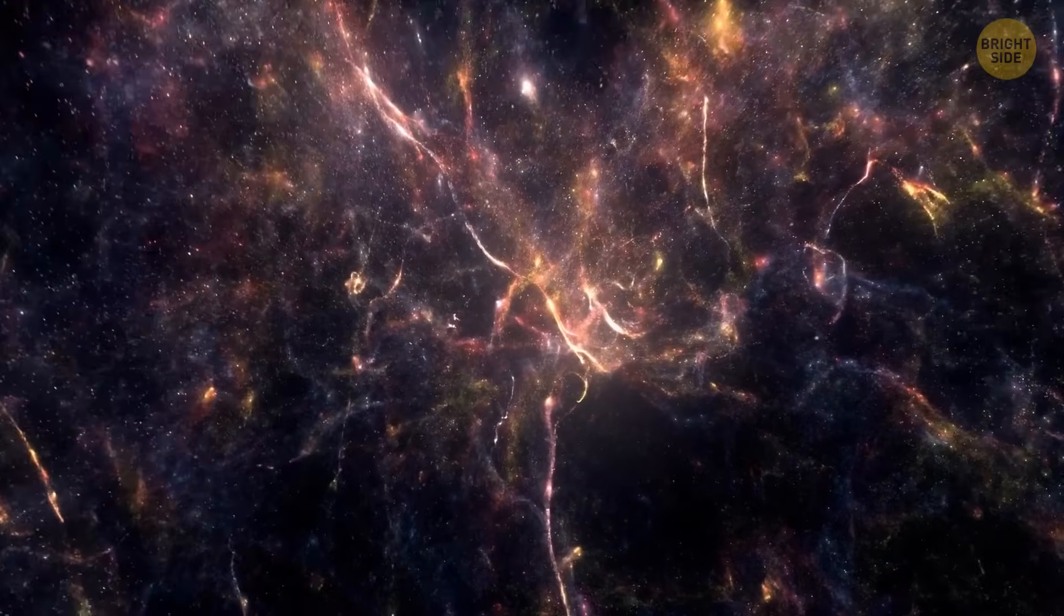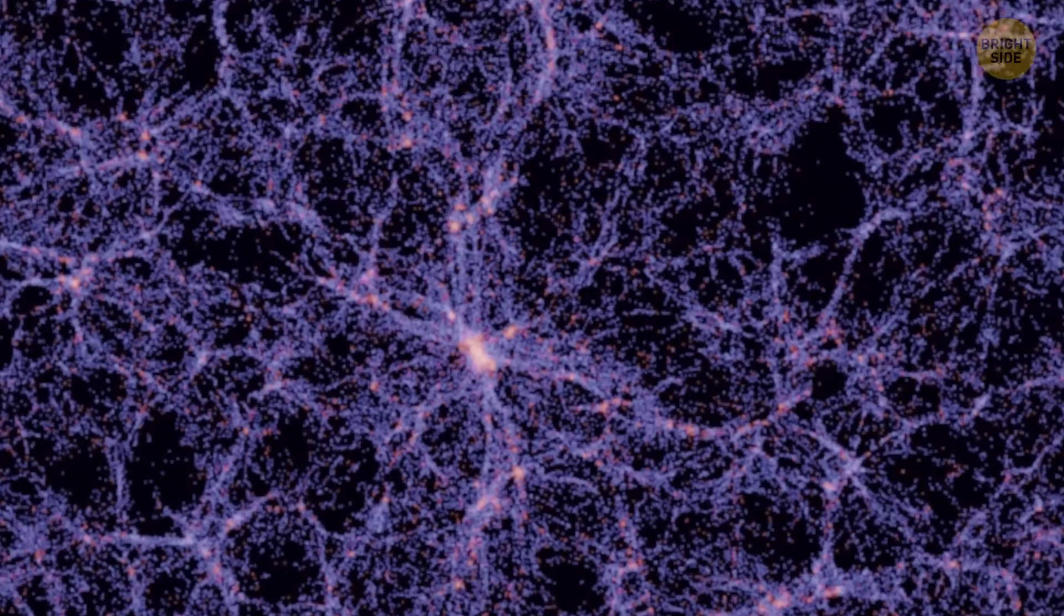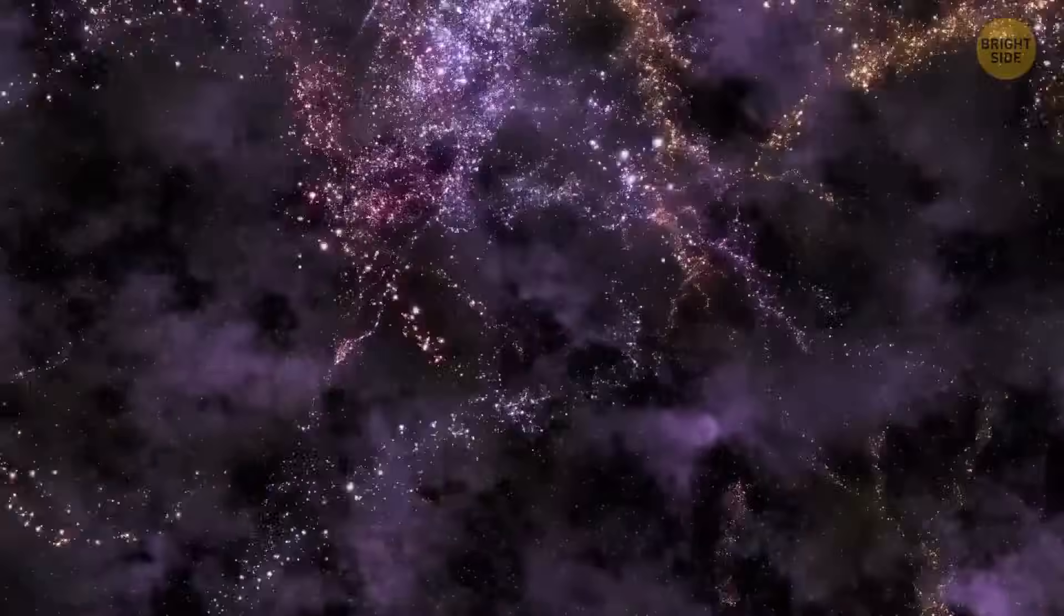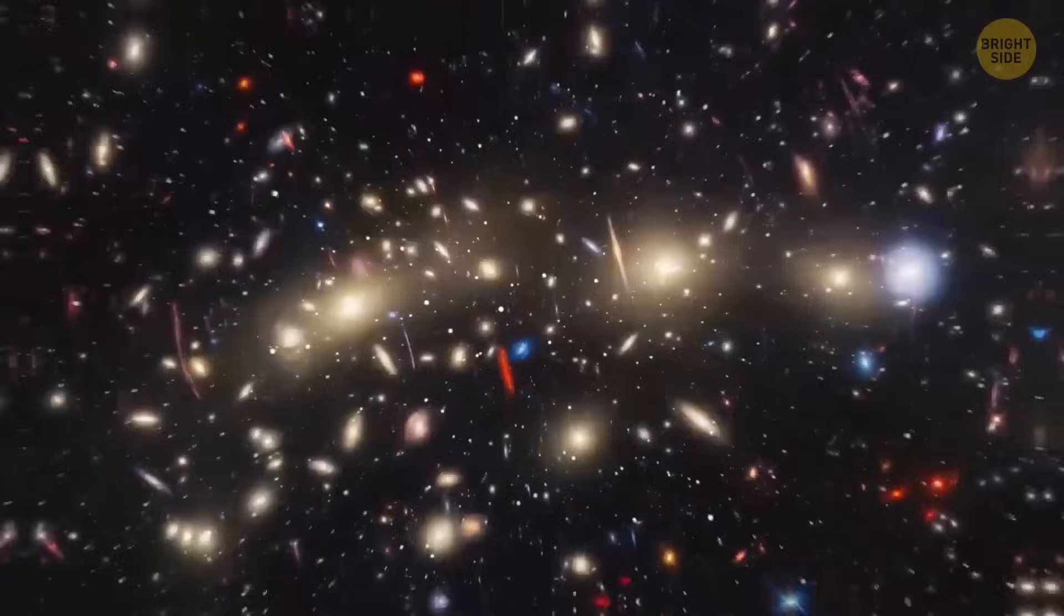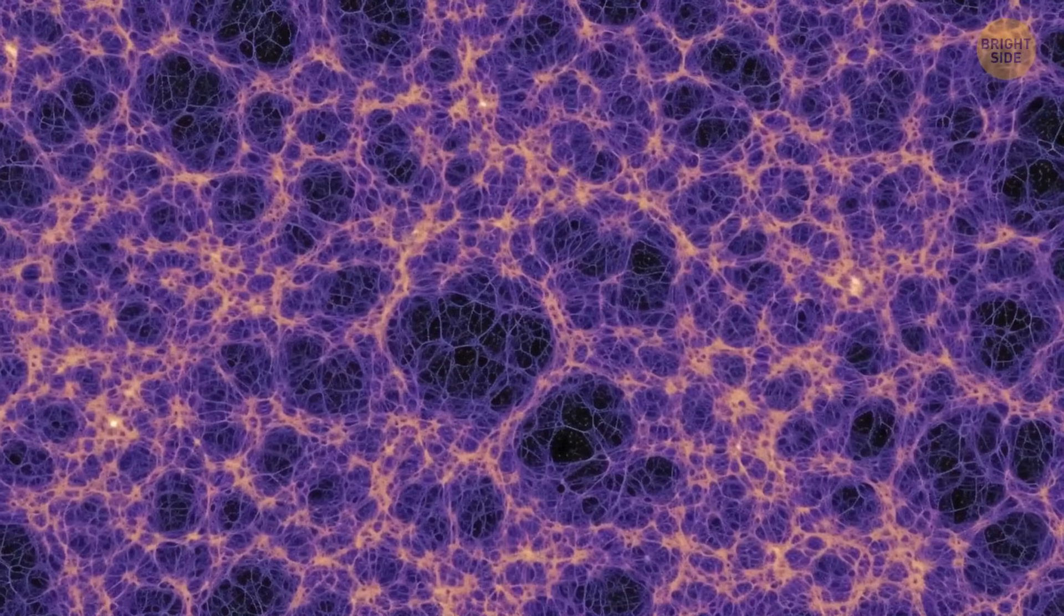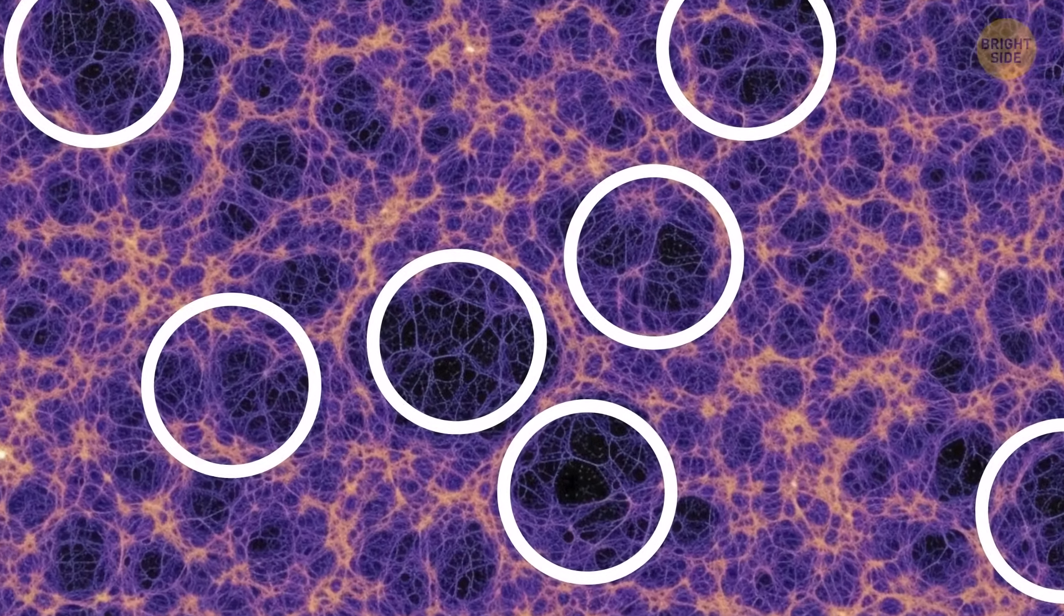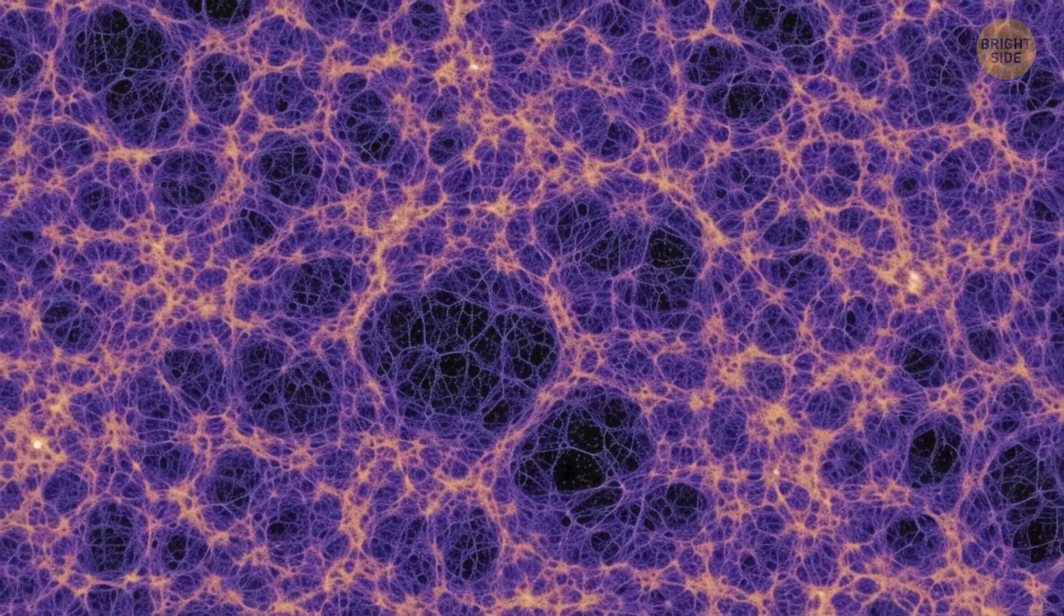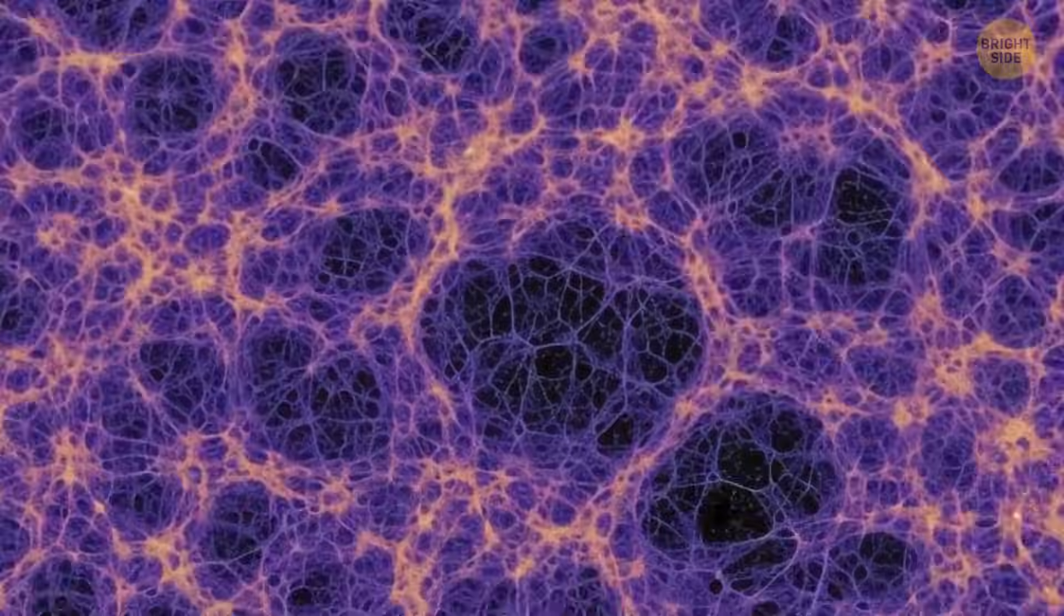Now we know that galaxies look like a giant web. Most of them are parts of long structures called filaments. Those wind through the cosmos, and when they meet, they form regions with a high concentration of galaxies. These regions are what we know as galaxy clusters. But between these clusters and threads, there are ginormous empty voids that hardly contain any galaxies.